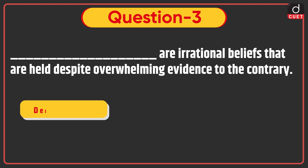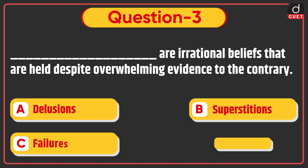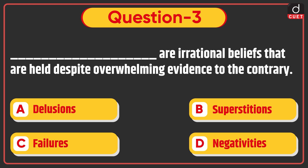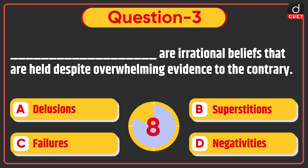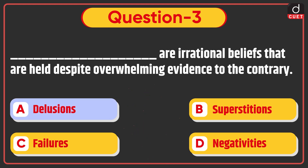Next question: Dash are irrational beliefs that are held despite overwhelming evidence to the contrary — Delusions, Superstitions, Failures, or Negativities. The correct answer is option A, Delusions.